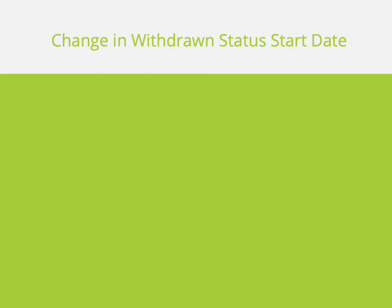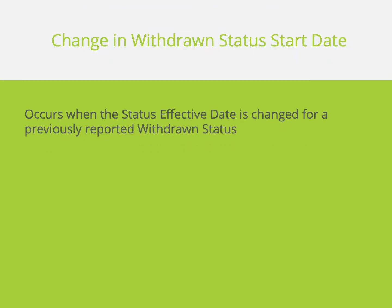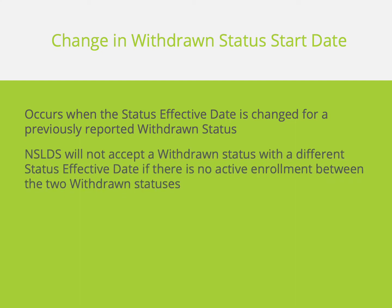Our next Error 32 scenario occurs when the status effective date for a previously reported withdrawn status is changed. NSLDS will not accept two back-to-back withdrawn statuses with different status effective dates if there is no active enrollment between them.